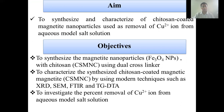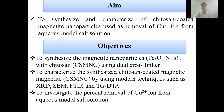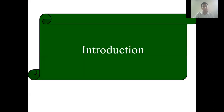The objective was to synthesize magnetic nanoparticles with chitosan coating, to characterize the chitosan-coated magnetic nanoparticles using modern techniques such as XRD, TEM, FTIR, and TGA/DTG. Finally, to investigate the percent removal of cobalt ion from aqueous model source solution.